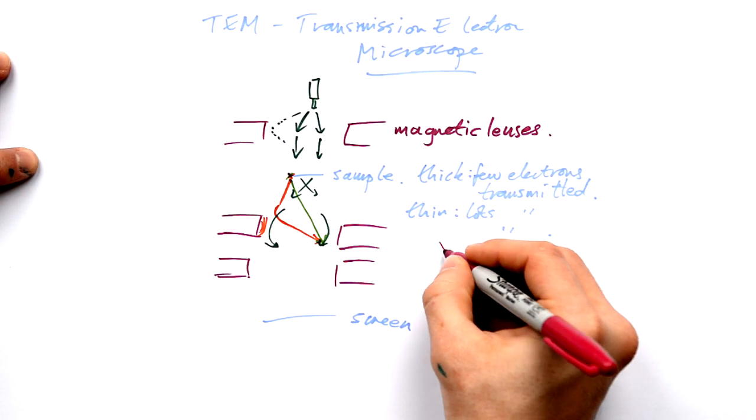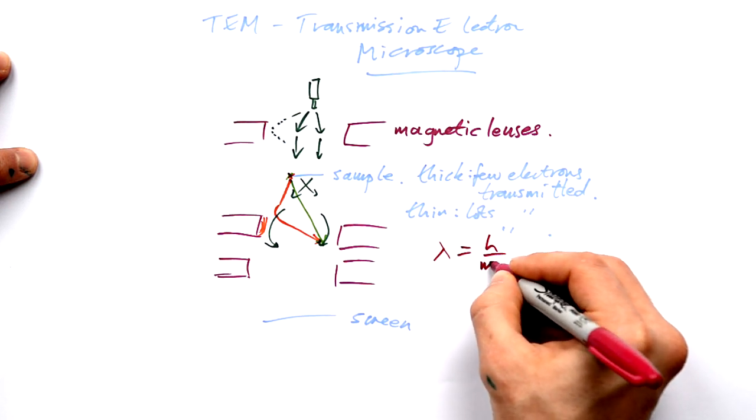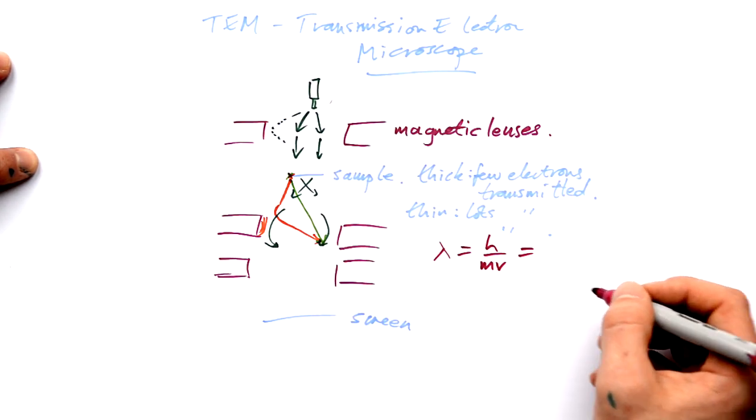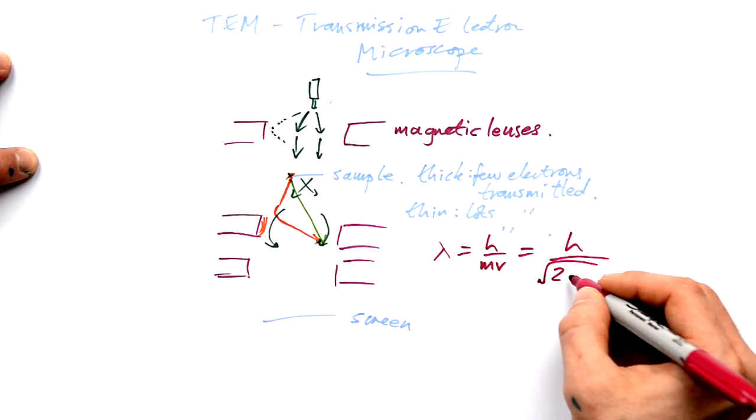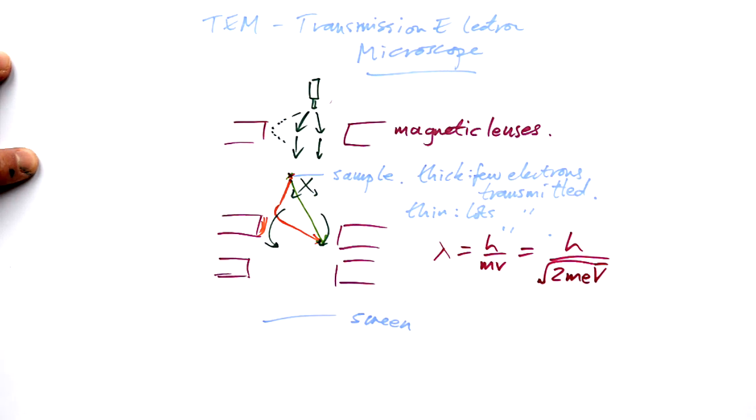Now the de Broglie wavelength of an electron is going to be H over MV, or H over the momentum, Planck's constant over momentum. Using the fact that we know this is an electron gun, we can go straight for, and you get given this in your formula sheets, so you don't need to even remember it, square root of 2MEV. V being the accelerating voltage.